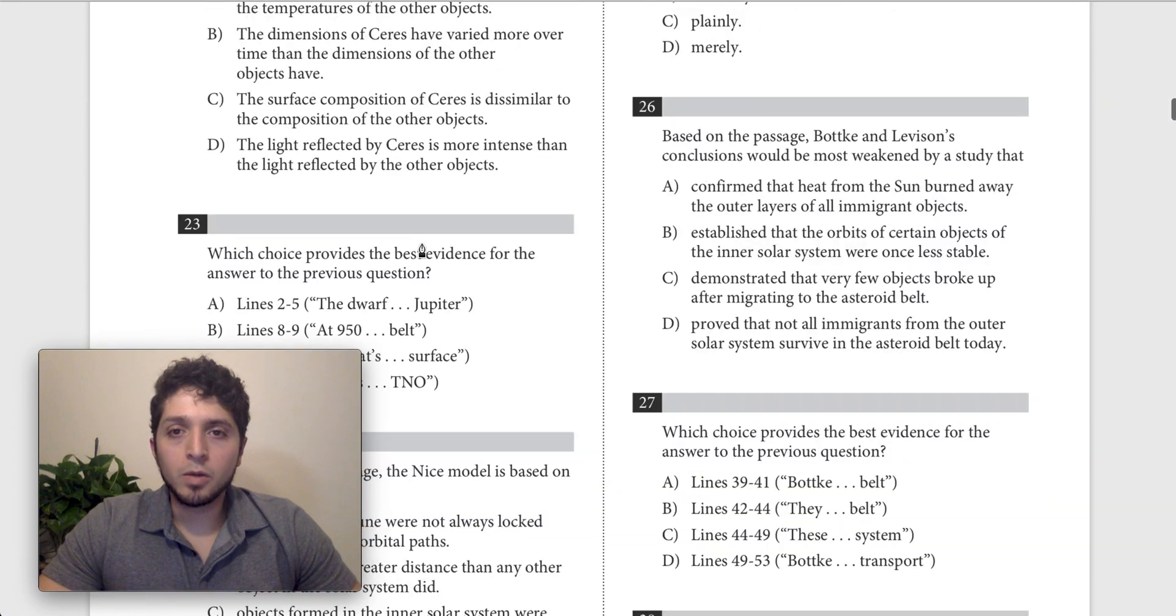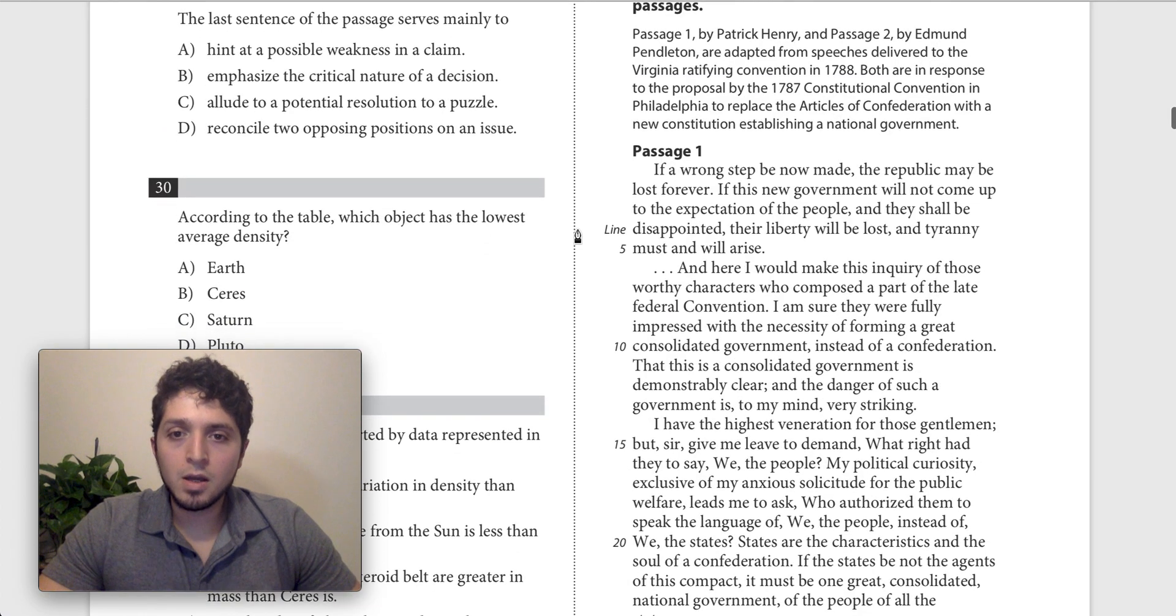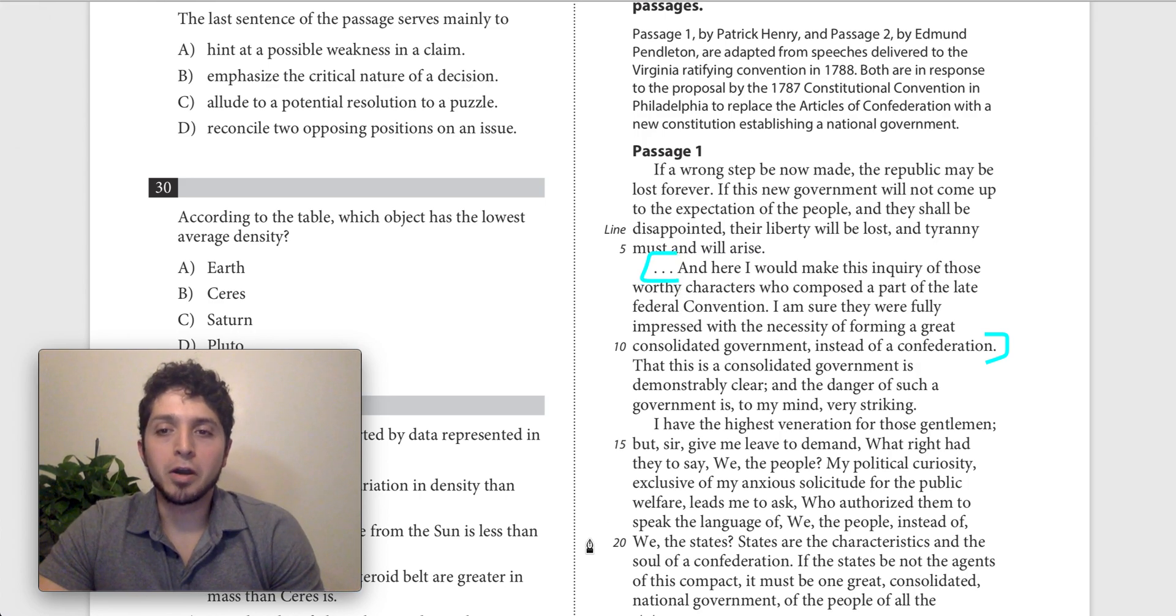But let's go through 42. We go through lines 6 to 10 first, which say, and here I would make this inquiry of those worthy characters who composed a part of the late federal convention. I'm sure they were fully impressed with the necessity of forming a great consolidated government instead of a Confederation.